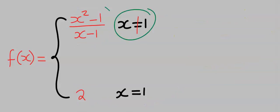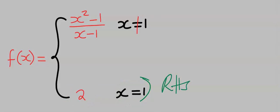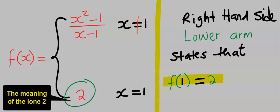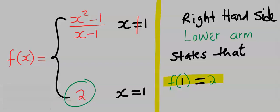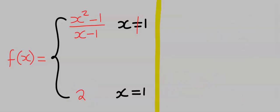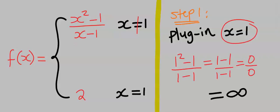This is the condition guiding the upper arm, which is the left-hand side. And this is the condition guiding the lower arm, which is the right-hand side. The right-hand side states that there was a function where the limit as x tends to 1 gave us 2; however, we were not given the function. For the upper arm, which is the left-hand limit, plugging in x equal to 1 gave us undefined. To avoid this, the condition states x must not be equal to 1.